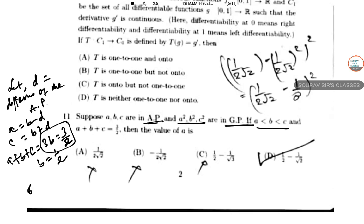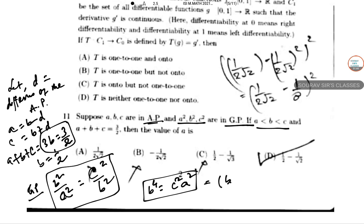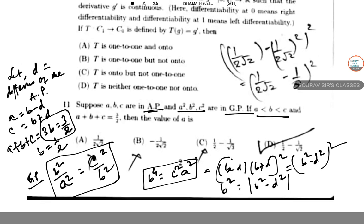From A + B + C = 3B = 3/2, we get B = 1/2. For the GP condition: B⁴ = C² · A². So (B² - D²)² ... taking B = 1/2: we get either D² = 0 or D² = 2B² = 2(1/4) = 1/2, giving D = ±1/√2.